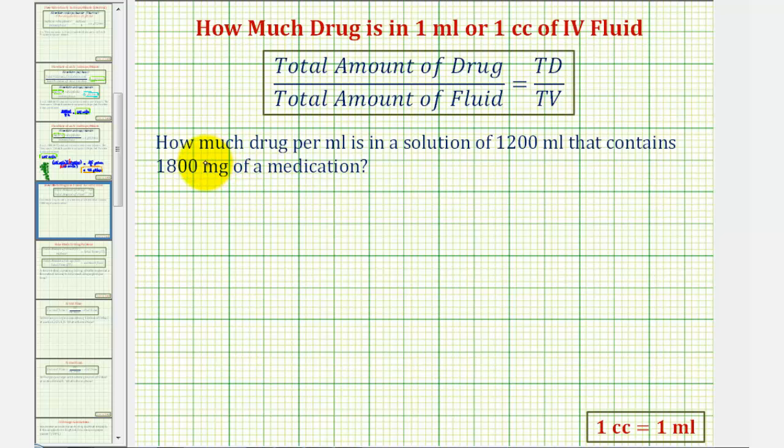As an example, we can determine how much drug per milliliter is in a solution of 1,200 milliliters that contains 1,800 milligrams of medication by taking the total amount of drug, which is 1,800 milligrams, and dividing it by the total amount of fluid, which is 1,200 milliliters.